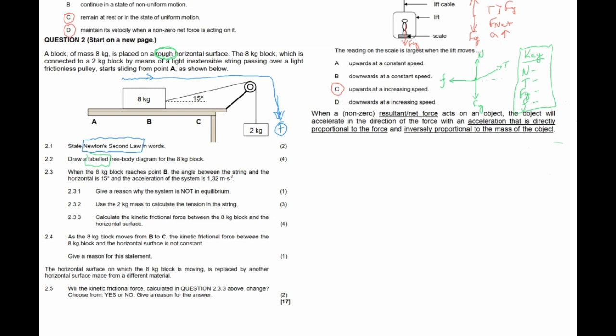When the 8 kilogram block reaches point B, the angle between the string and the horizontal is 15 degrees, and the acceleration of the system is 1.32 m/s². For any two-body system linked by an inextensible string, both objects have exactly the same acceleration. The pulley also means they share the same string and therefore the same tension — the pulley only changes the direction of the force, not its magnitude.